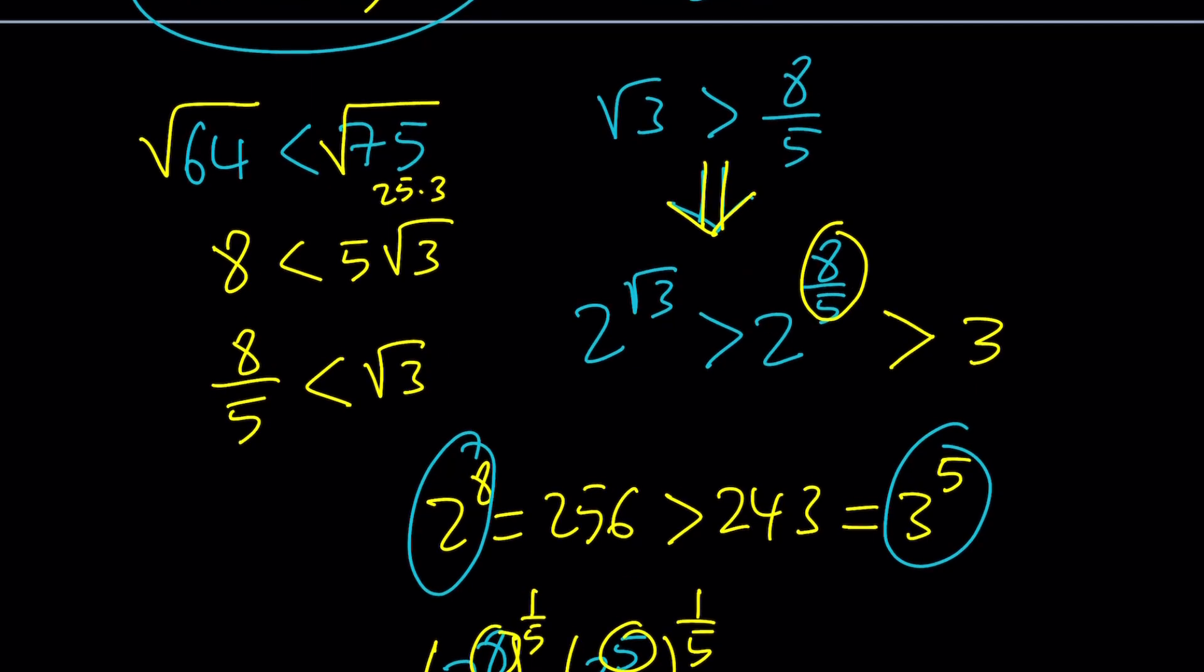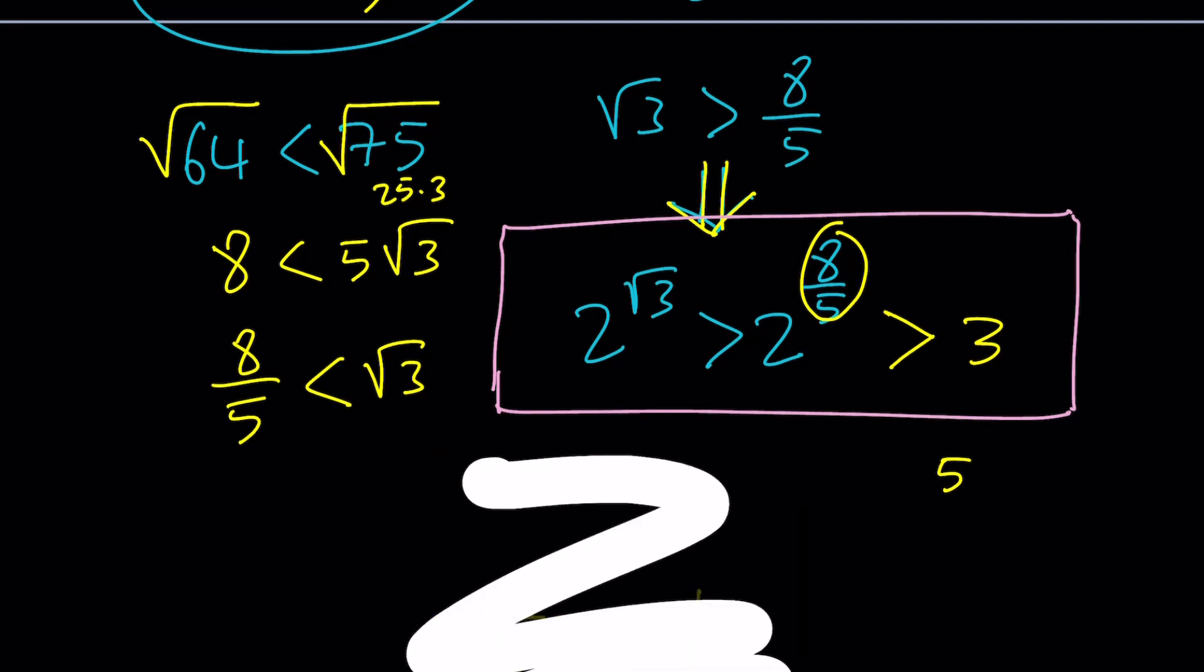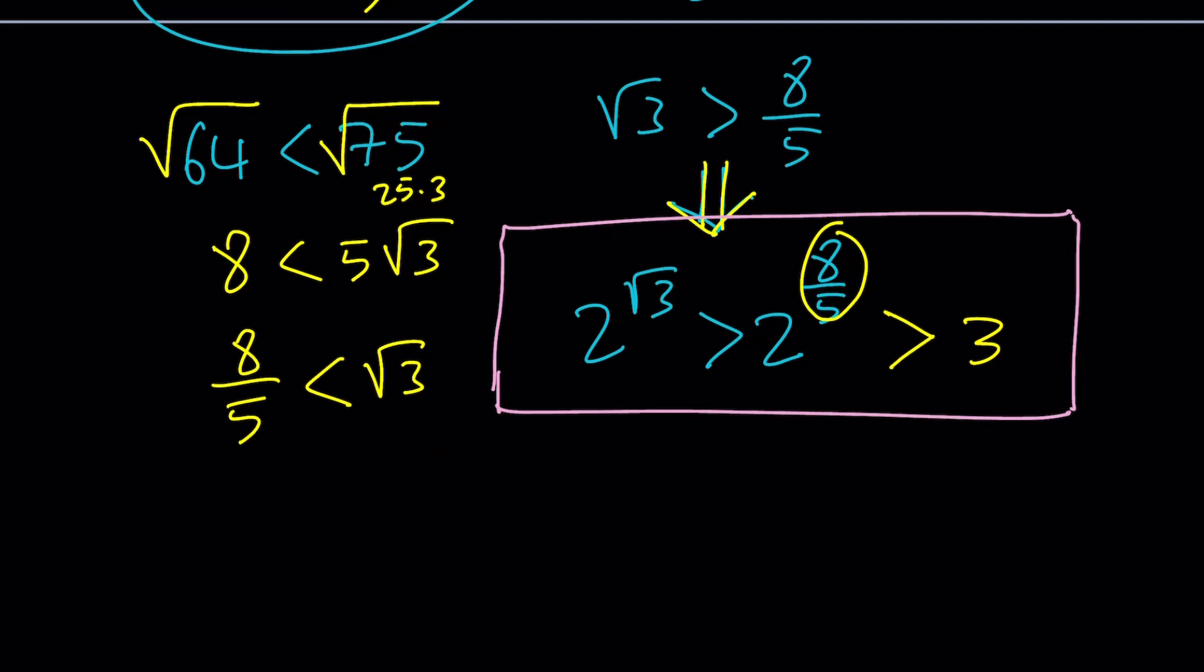So, we basically show that 2 to the power of root 3 is greater than 2 to the power of 8 over 5, and 2 to the power of 8 over 5 is greater than 3. So, as a conclusion, we can safely say that 2 to the power of root 3 is greater than 3.